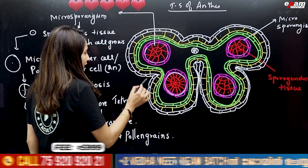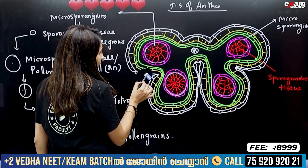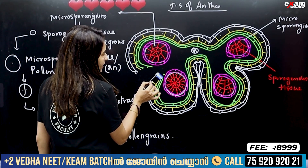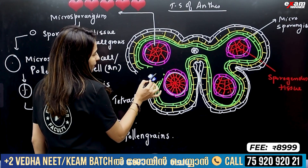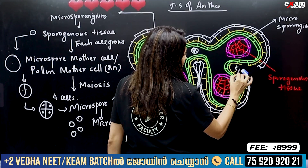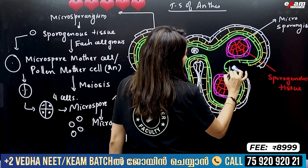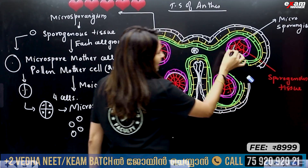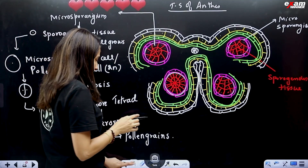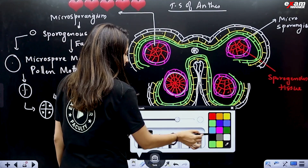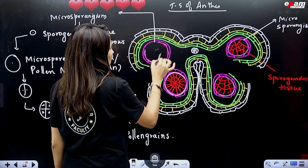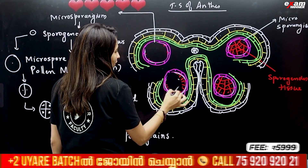What are these pollen grains? We put it in 3 layers. What is in the microspore? There is sporogenous tissue in the microspore — there are nutrients.